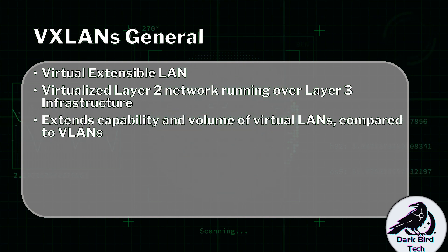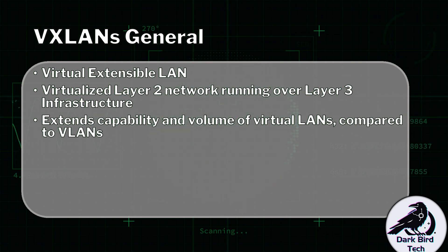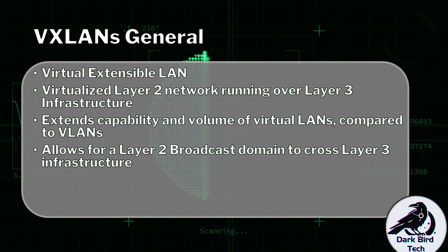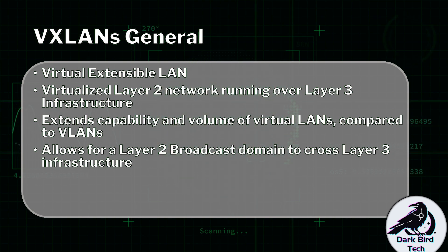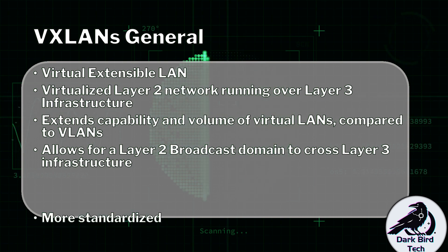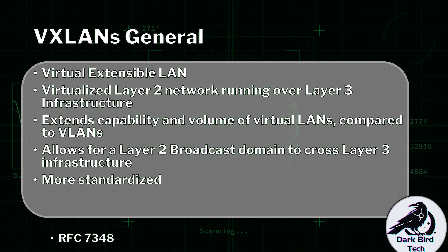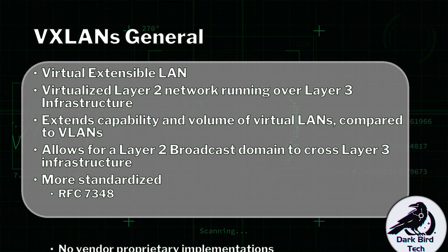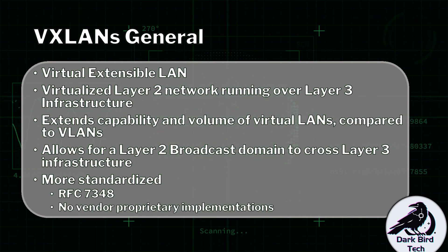Besides now allowing separate VLAN infrastructures and different LAN segments to be able to actually work as one, we are going to have more of them too. It basically allows us to have our layer two broadcast domain crossing layer three infrastructure without causing a problem for unrelated network segments. And a major selling point for VXLANs is it is a lot more standardized — documented by the IETF RFC document 7348. There are no vendor proprietary implementations of VXLANs. It is all open standard.